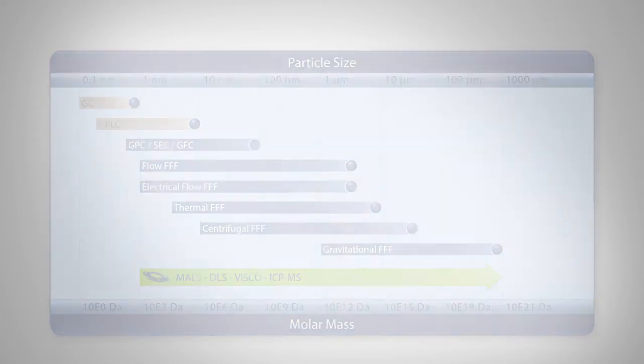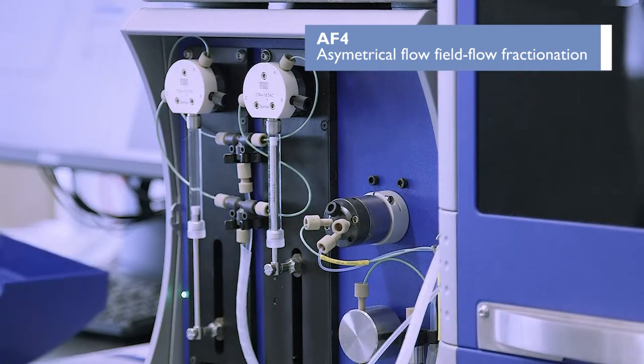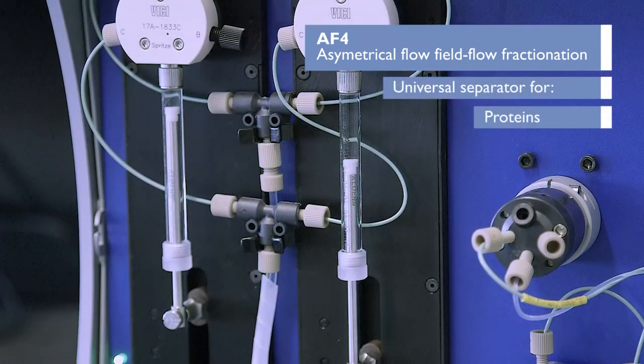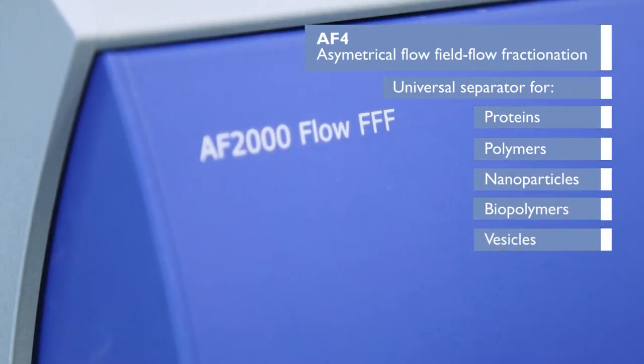The most universal technique is asymmetrical flow FFF, using a cross flow to achieve the separation power. This is used for proteins, polymers and nanoparticles in the range of 1 nanometer up to 10 microns.